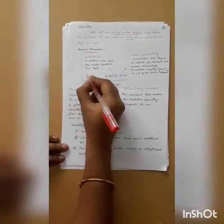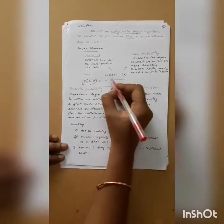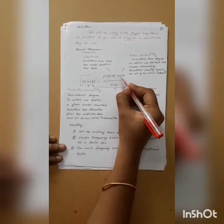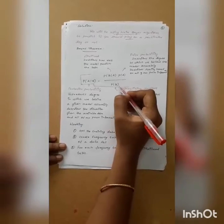The probability of A given B is equal to probability of B given A times probability of A divided by probability of B.